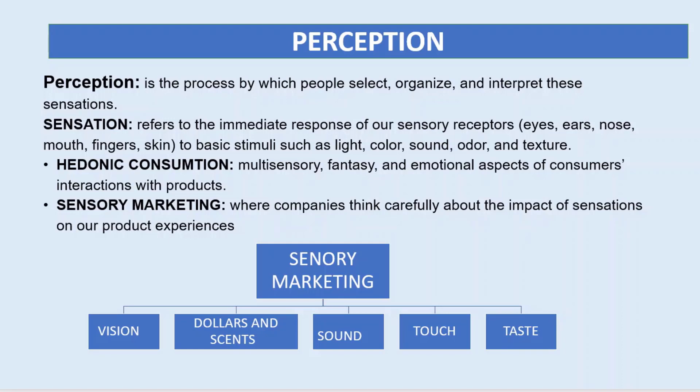Smell and scent: marketers create calming feelings that invoke memories or relieve stress — they invoke those feelings in customers. Sound: marketers use an audio watermark that affects the consumer's sensory experience. Touch: marketers make people imagine holding the product. For example, if you want to buy a t-shirt, some consumers love to touch or feel the physical product.